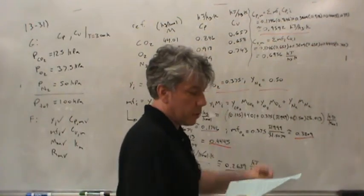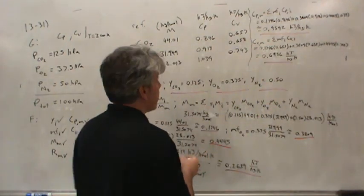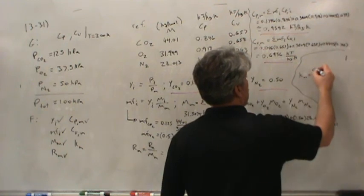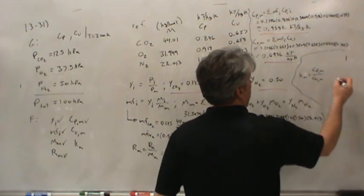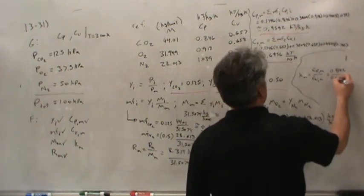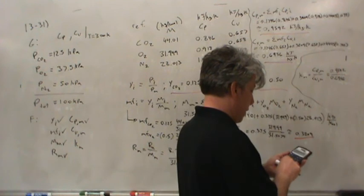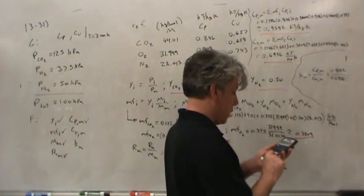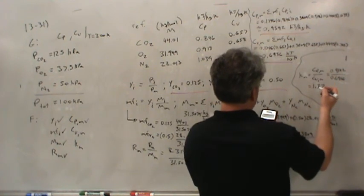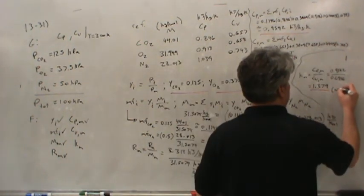Before I got 0.70040 using wrong fractions, and this is close to that, so I'm confident in the calculator result. The last thing is the heat capacity ratio of the mixture: γ = Cp_mix / Cv_mix = 0.9592 / 0.6956, which is dimensionless and comes out to 1.379.